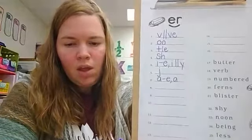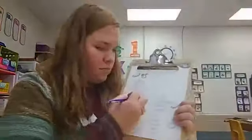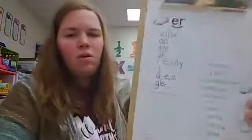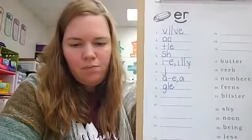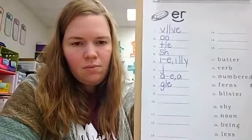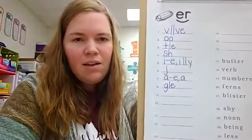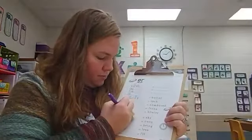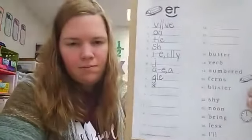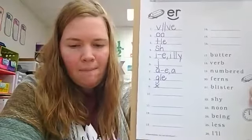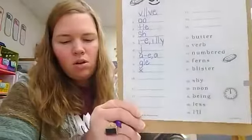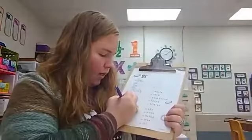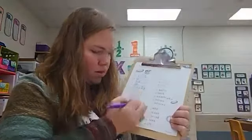Number eight, goal, goal, like spangle, final, stable, syllable, G-L-E. Number nine, ks, ks, the letter X. And number 10, dole, dole, like in the word bundle, final, stable, syllable, D-L-E.